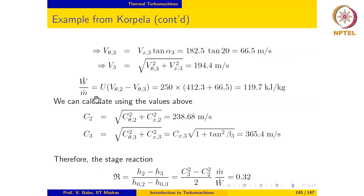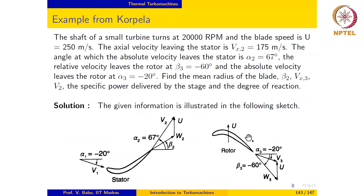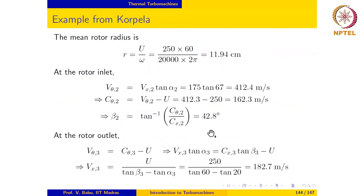So once I know vx3, I can now go back and calculate v-theta-3 as vx3 times tan alpha3, which gives me 66.5 meters per second. And using Pythagoras theorem, I can calculate the absolute velocity at exit, v3, equal to 194.4 meters per second.